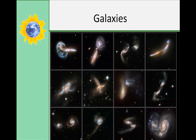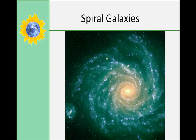Galaxies are huge groups of star systems, star clusters, and gas and dust. There are three main categories of galaxies based on their general shape: spiral, elliptical, and irregular. Our Milky Way galaxy is a spiral galaxy. Spiral galaxies have a bulging central nucleus, and the arms spiral outward from it. The arms contain many young bright stars, and older stars are found in the nucleus. About 15% of the observed galaxies are spiral galaxies. Some spirals also have a huge bar-shaped region of stars through the nucleus, and it's called a barred spiral.